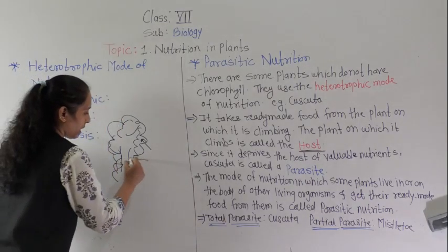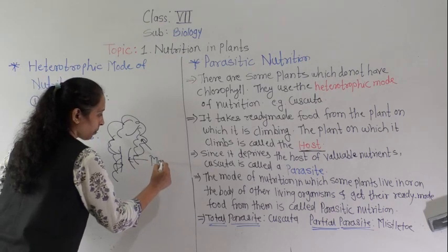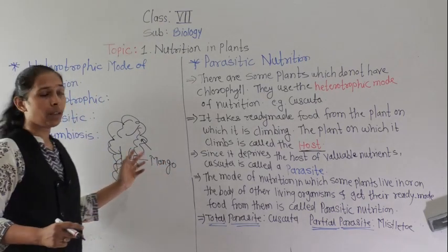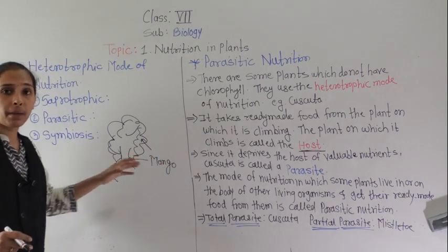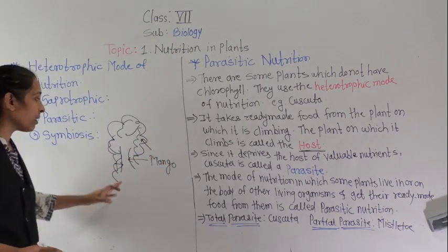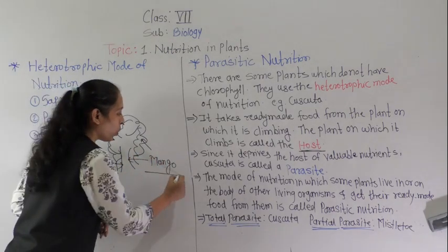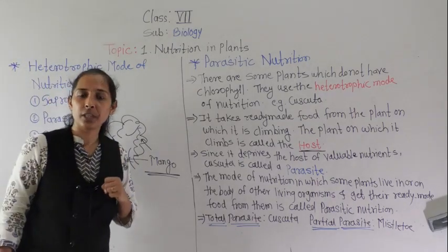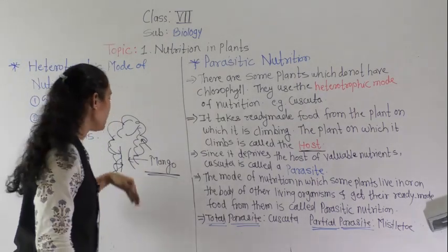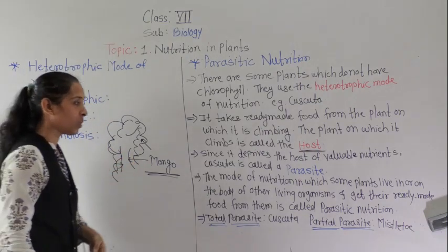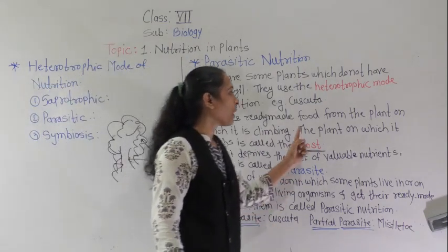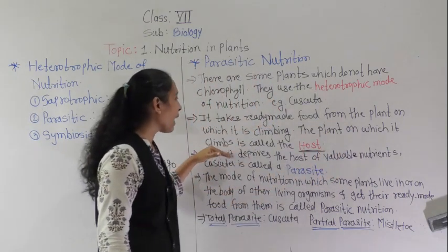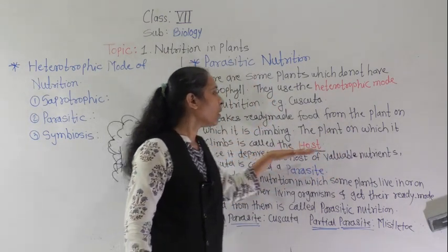Here we can say it is the mango tree. On this mango tree, the twines of the cascuta plant are climbing. Then here the mango tree is the host tree. From the mango tree, they are sucking the nutrients — they are taking the nutrients from this mango tree. So, the plant on which it climbs is called the host.